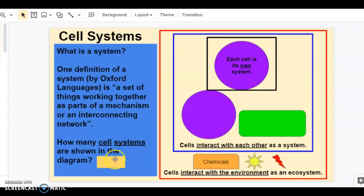So, how many cell systems are shown? Three.